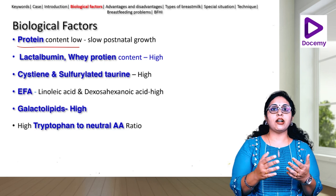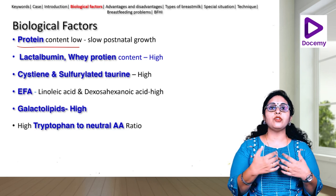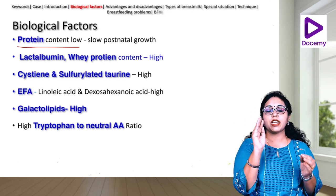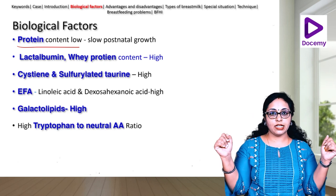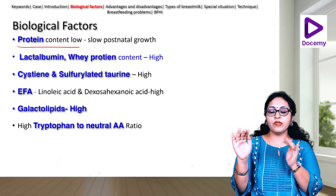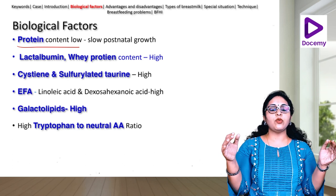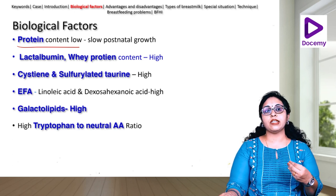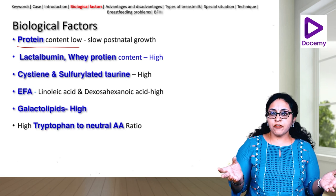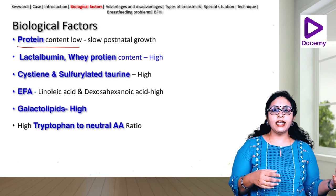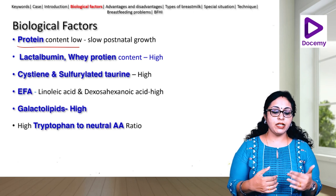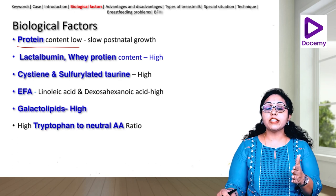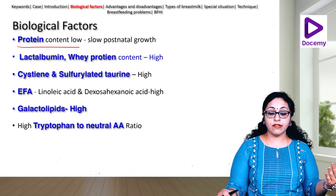Protein content decides how fast your baby grows. Our babies grow at a slow pace compared to rabbit babies or calves, which grow very rapidly. Because we only have a very slow postnatal growth, the protein content of human breast milk is on the lower side. However, the quality of breast milk is superior to other animal milks — the lactalbumin and whey protein levels are really high in human milk.